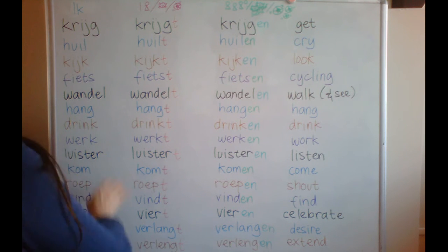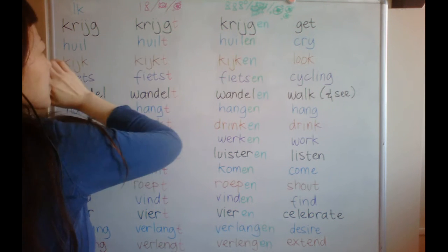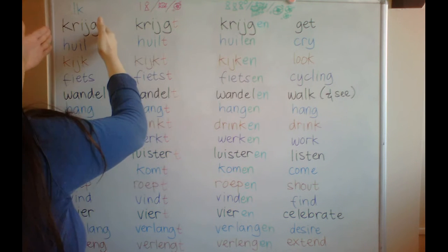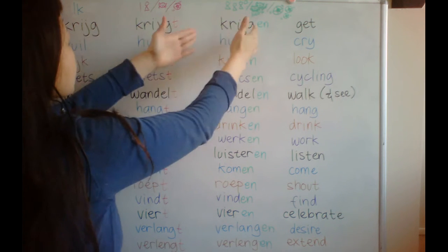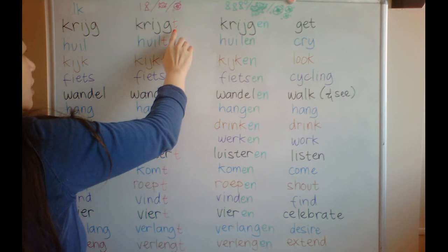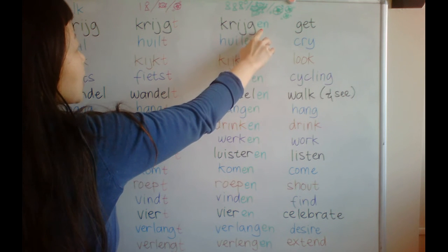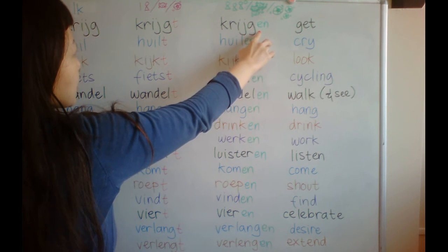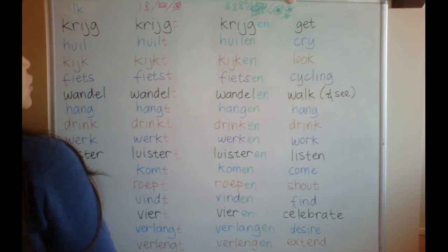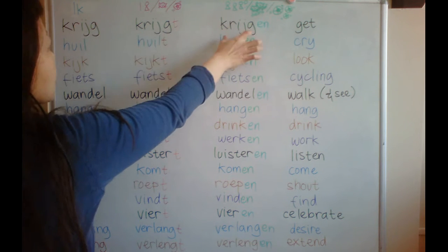With the 'ik' (I) form, the word here does not have to change — it stays the same. For singular subjects, you just put a 't' at the end of the word. For plural subjects, you put 'en' or 'an' at the end of the word. So this form shares a similar base word with other formats, but with other formats we have to change the word.